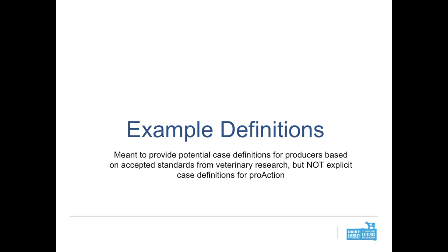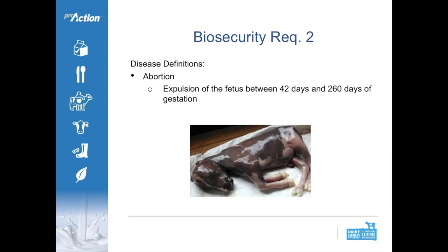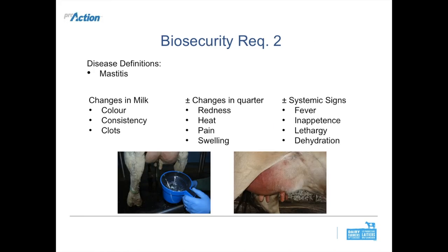The disease definitions discussed today are not specific case definitions outlined in Pro-Action, but rather industry- or vet-recommended definitions serving as guidelines when working with producers. Abortion is commonly defined as expulsion of the fetus between 42 and 260 days of gestation. For mastitis, look for changes in milk — color, consistency, clots — with or without changes in the quarter such as redness, heat, pain, or swelling, and systemic signs including fever, inappetence, lethargy, and dehydration.